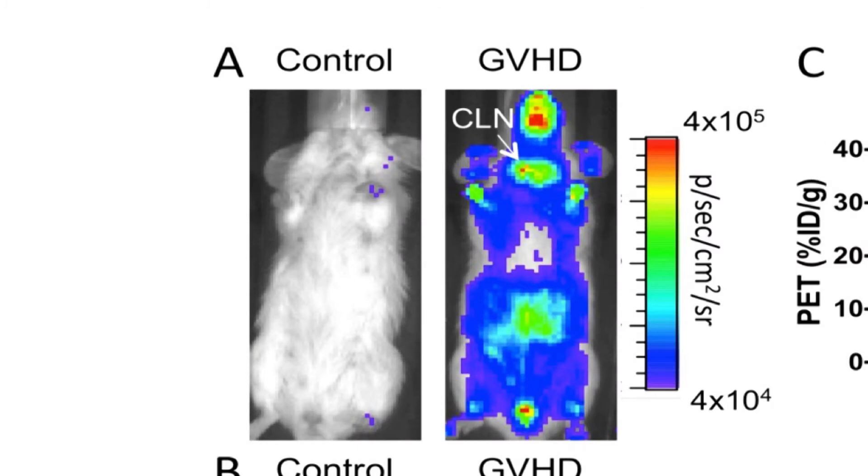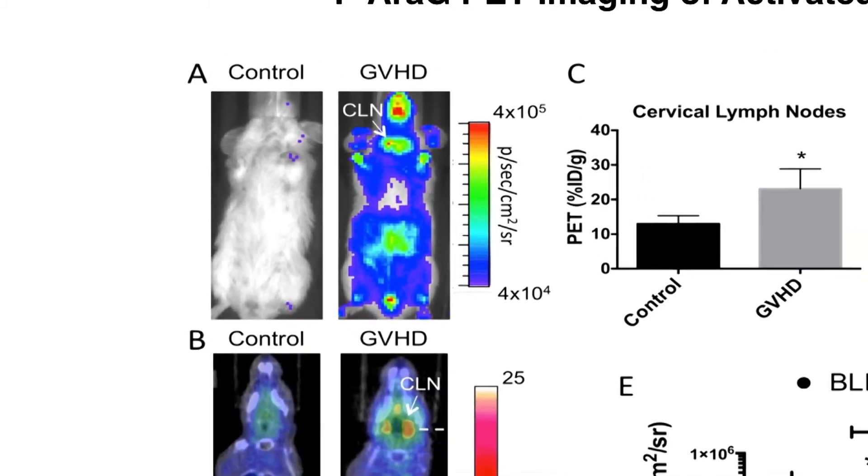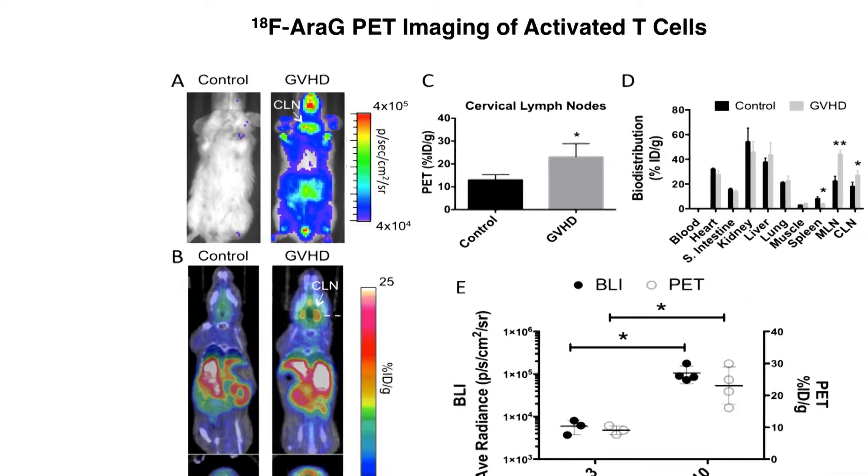Lymphocytes that infiltrate the tumor can be targeted using proliferation markers that are specific for T-cells and would discriminate between newly developing tumors and rapidly proliferating T-cells. From a safety perspective, knowing where the T-cells are is incredibly important, because on-target but off-site toxicities have been shown to have extremely damaging side effects for patients.